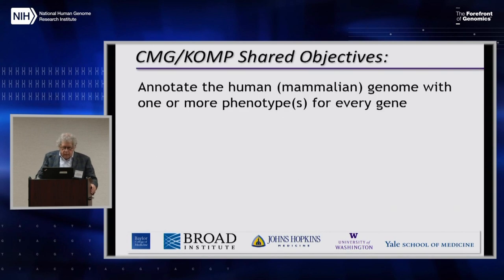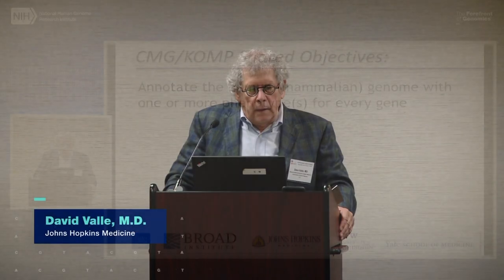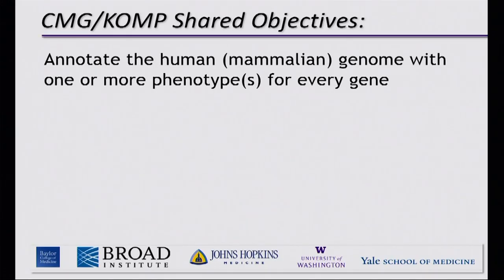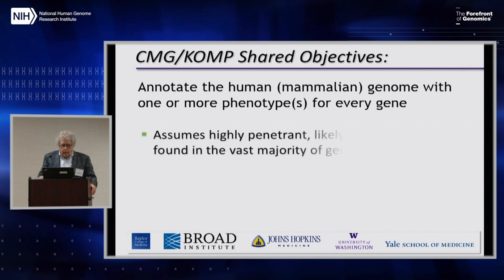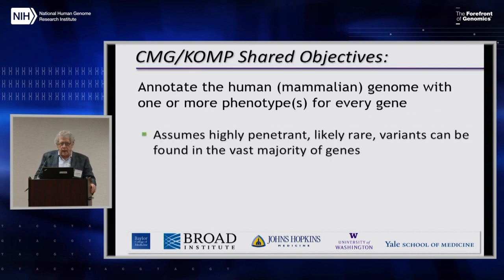I think that the CMGs and the COMP programs have a shared objective, and that's to annotate the human or mammalian genome with one or more phenotypes for every gene in the genome. Essentially it's a whole animal functional test for every gene in the genome. This goal assumes that highly penetrant, likely rare in humans, variants can be found for the vast majority of genes.